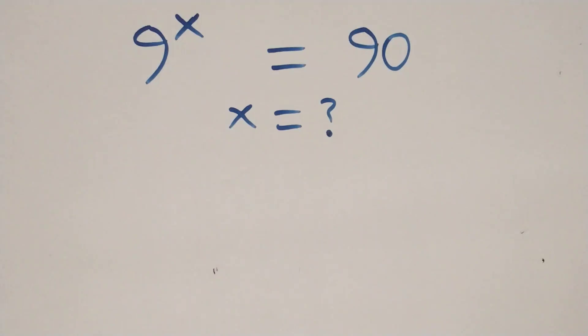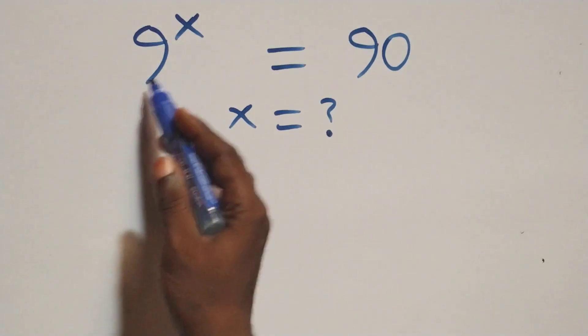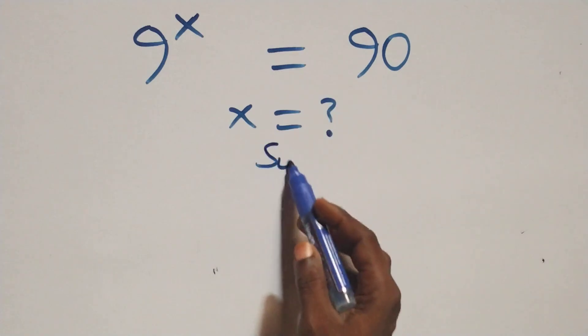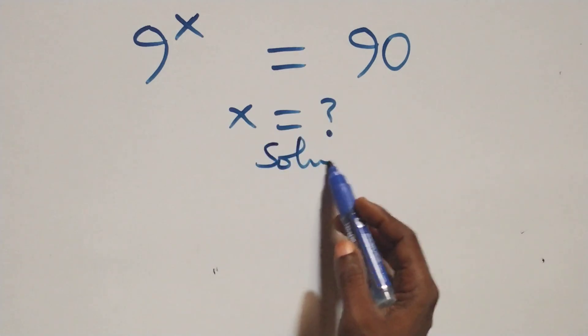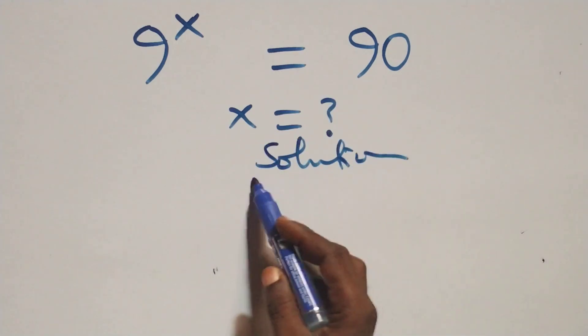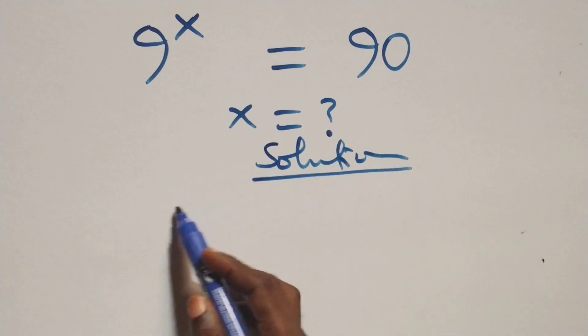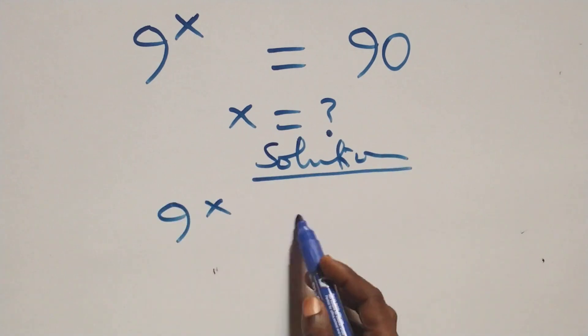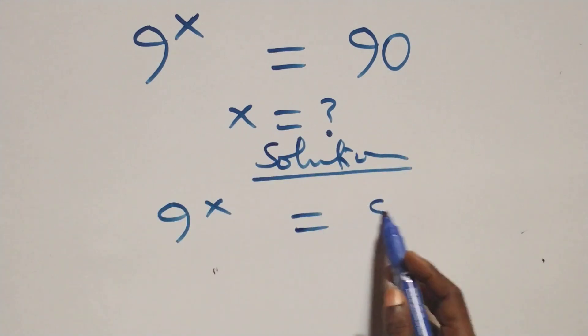Hello, you are welcome. Here we solve this nice exponential equation. What we have is 9 raised to the power x equals 90.